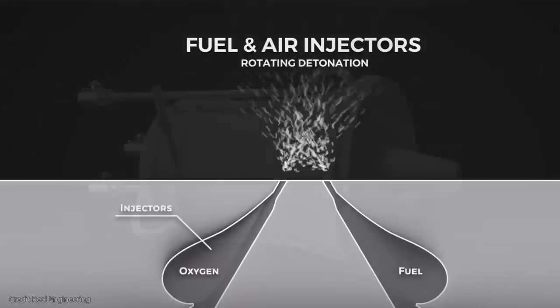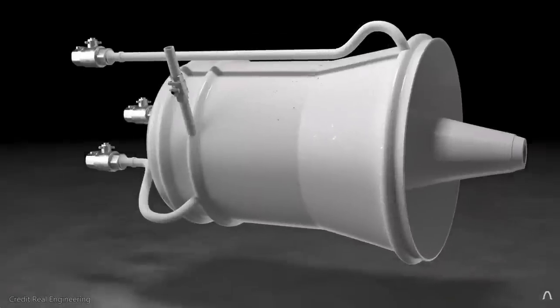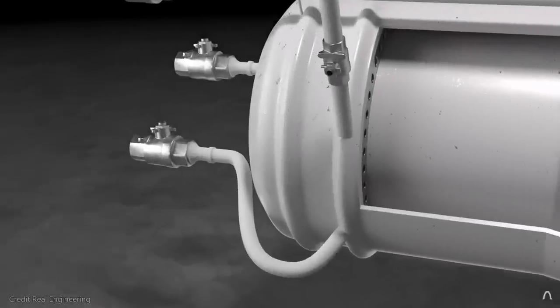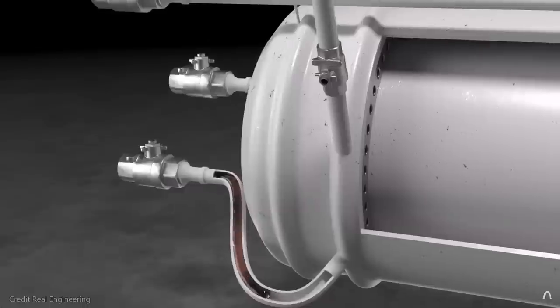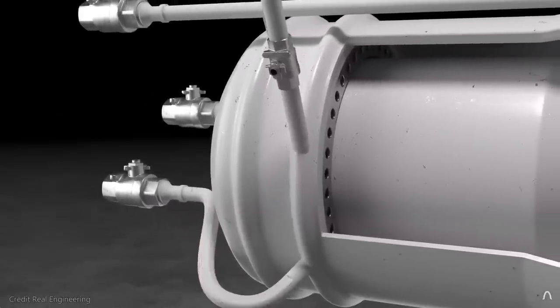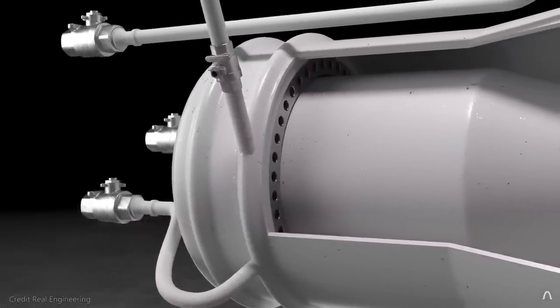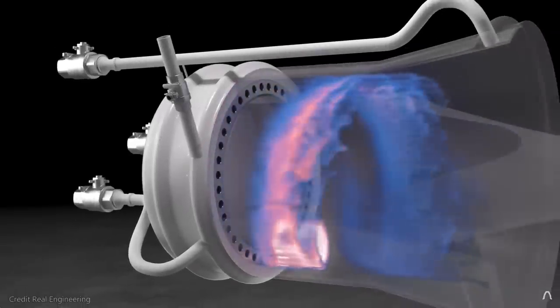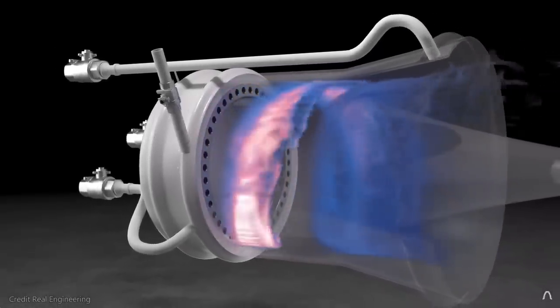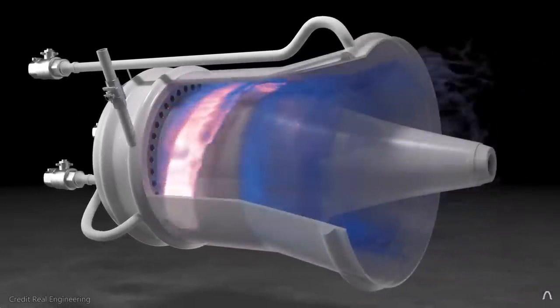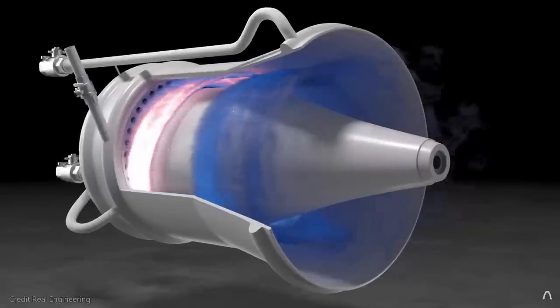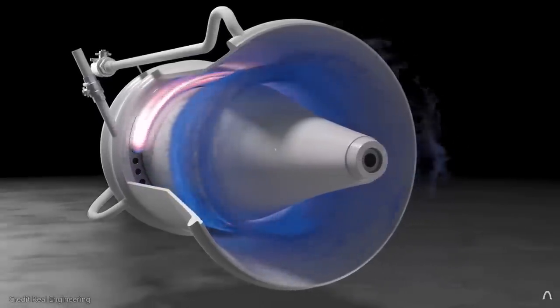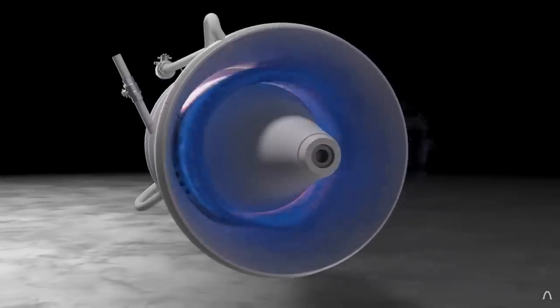When the high pressure shock wave passes over the valve, flow through the valve is obstructed by the vortices and the shock wave passes on. When the low pressure area behind the shock wave passes over the Tesla valve, fresh oxidizer and fuel gas can flow freely into the engine to be combusted when the shock wave comes around again. This allowed the creation of a stable rotating detonation engine which you see here that fired continuously for 10 minutes.